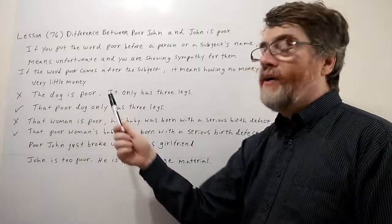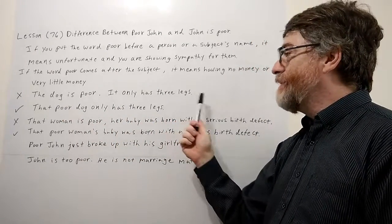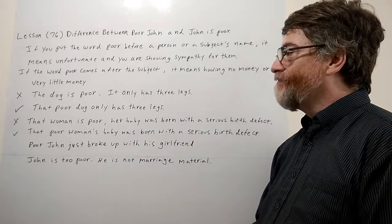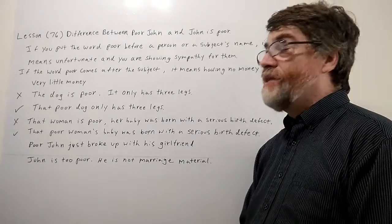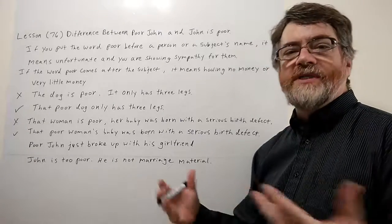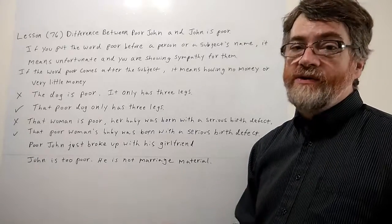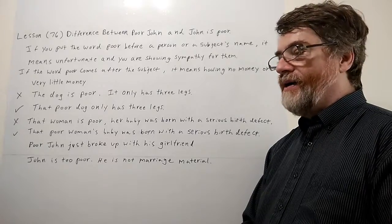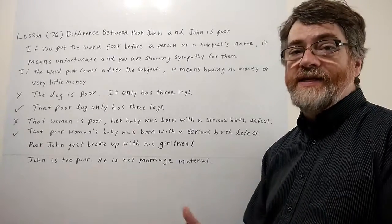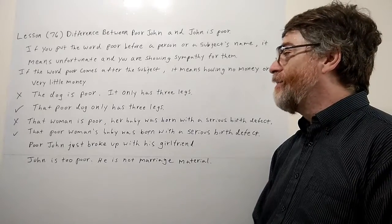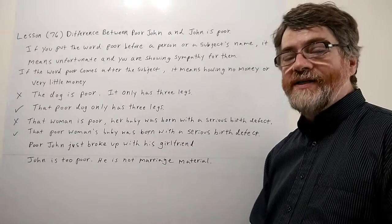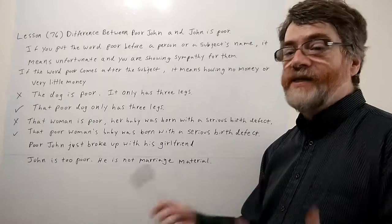Here's the first example of a mistake: 'The dog is poor — it only has three legs.' This is an obvious mistake. If you say 'the dog is poor,' it means the dog has no money, which is almost laughable. We don't expect dogs to have money — they're either wild, a stray, or have a master. It kind of even sounds funny, so somebody might laugh if you make this mistake.